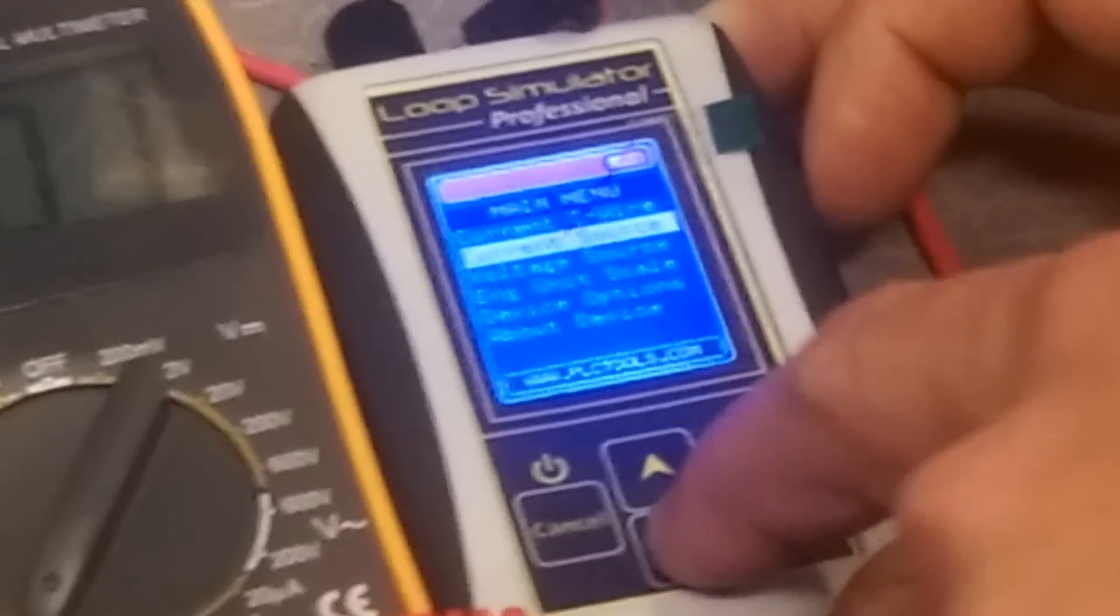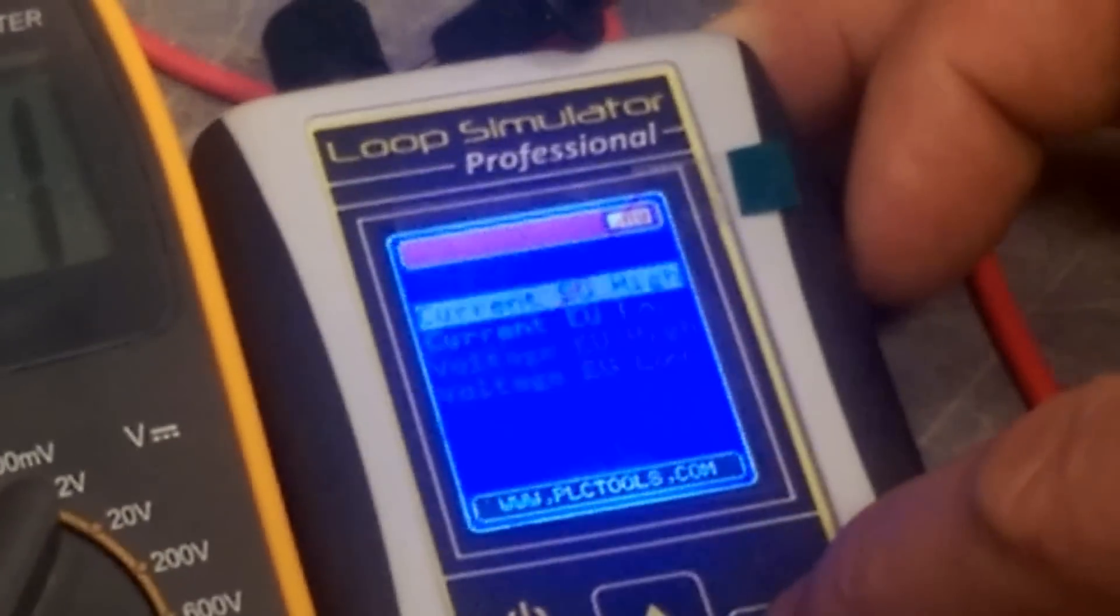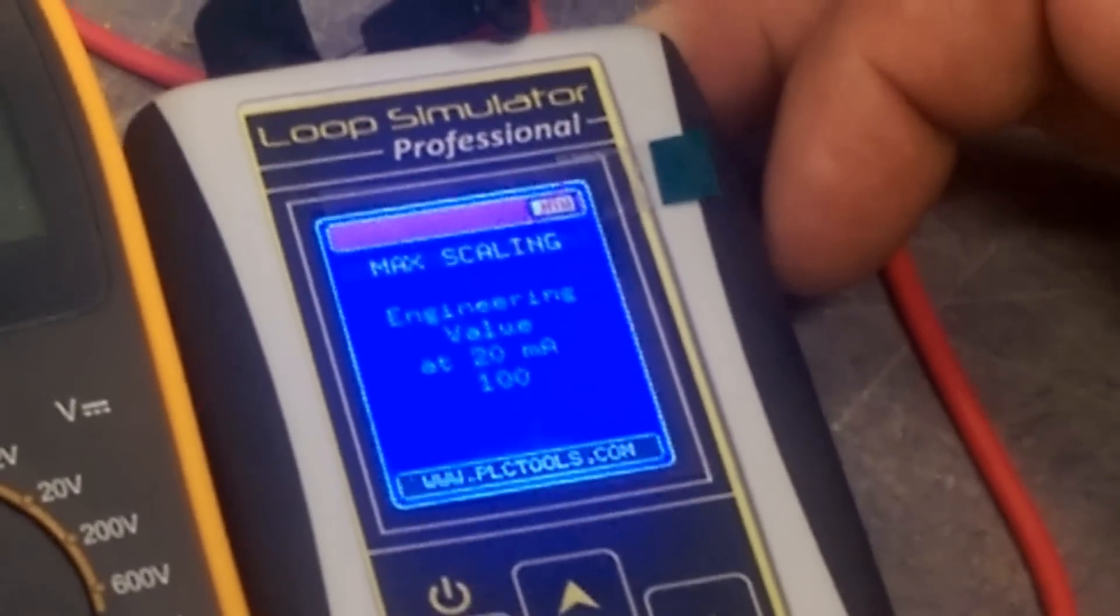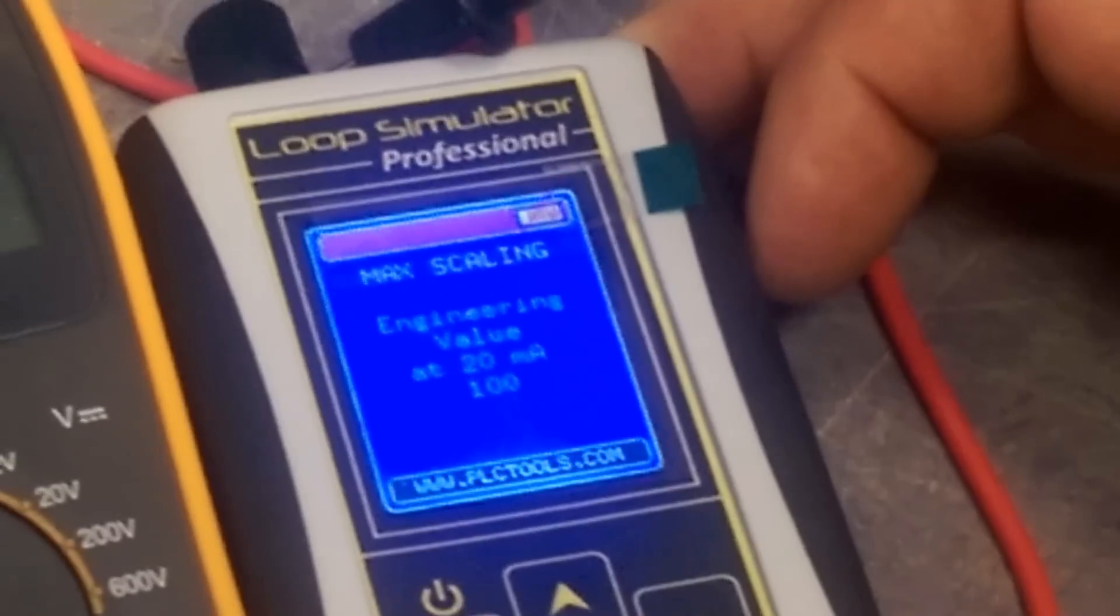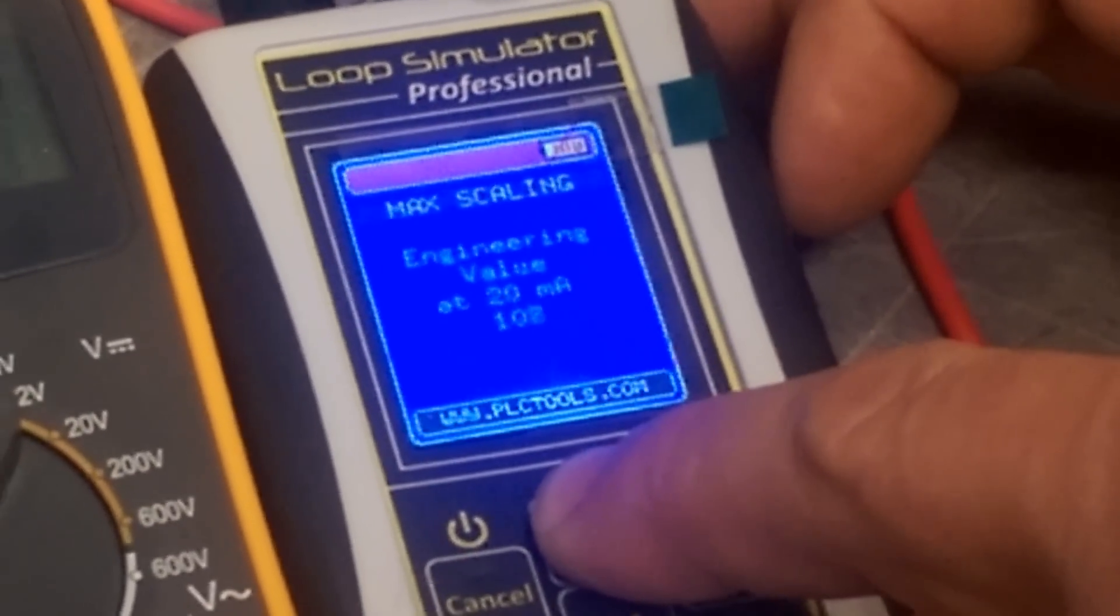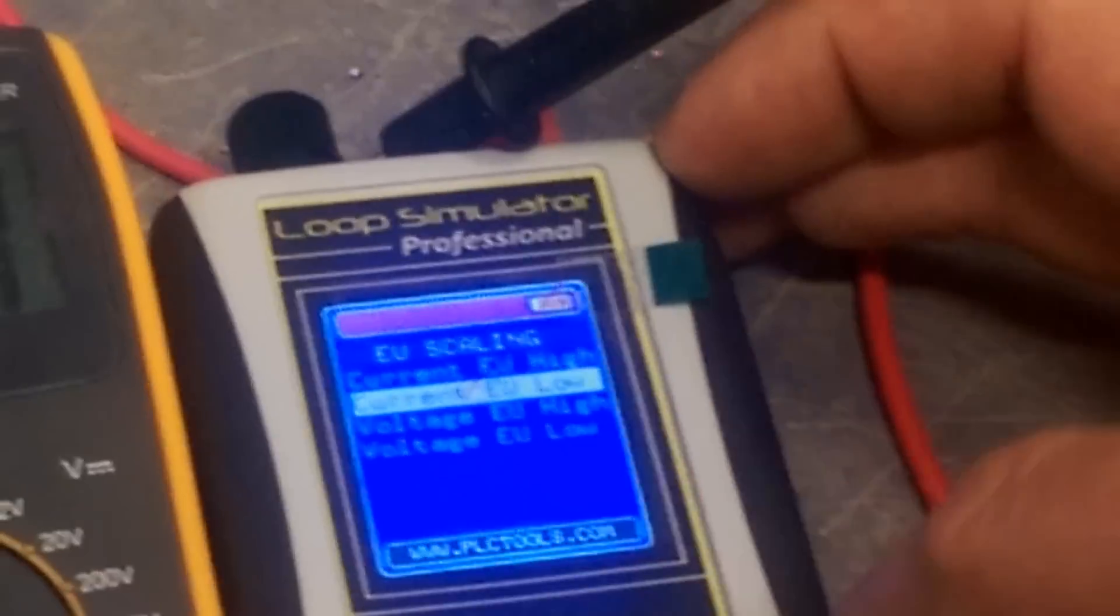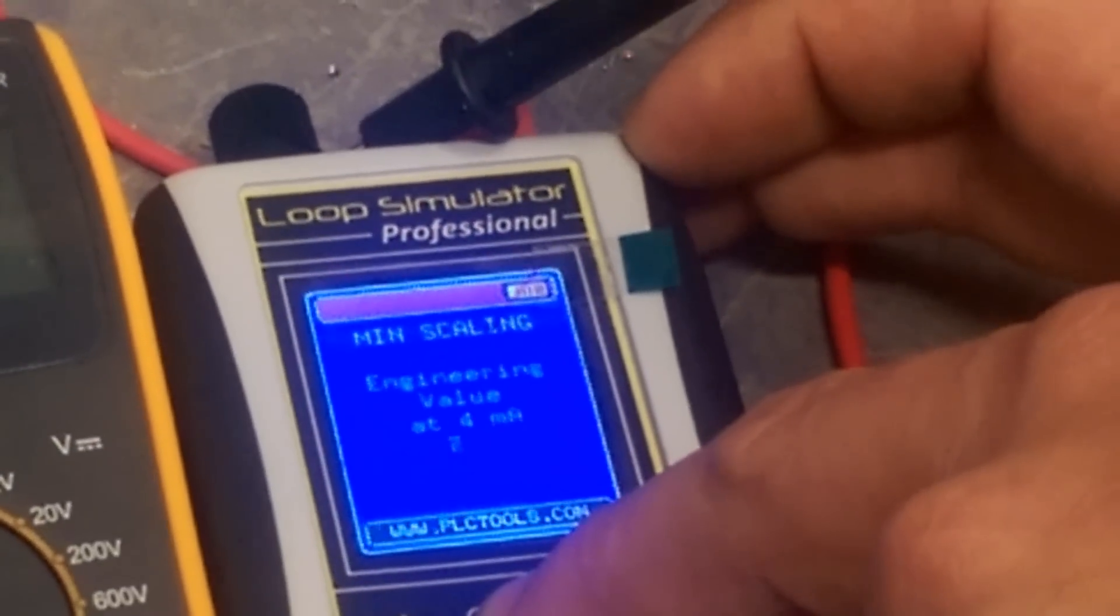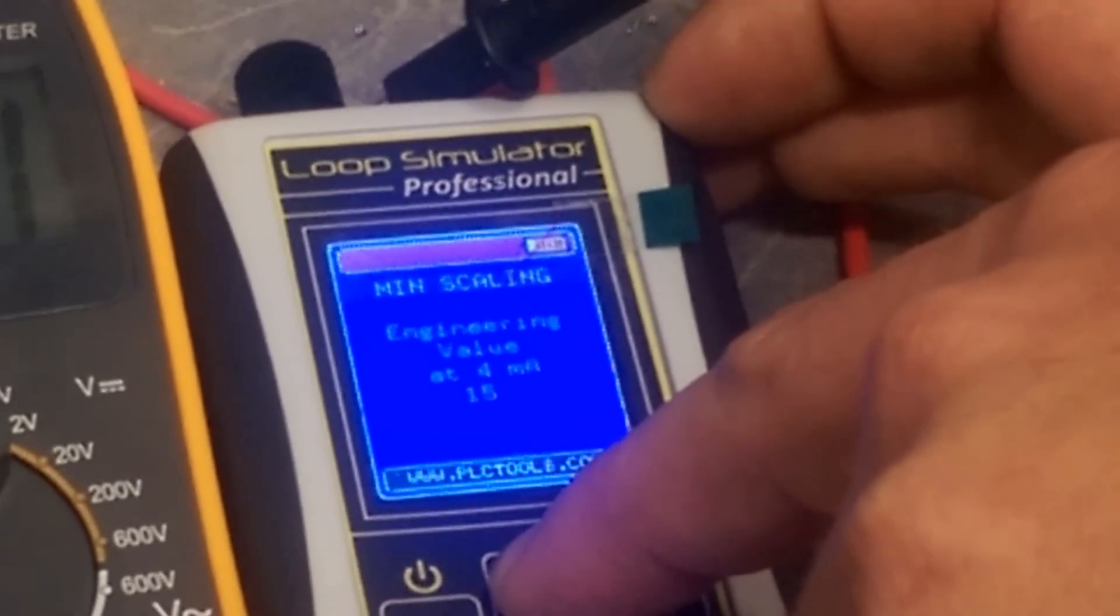Where we have our modes, if you go down, we also have engineering unit scale. And then we have EU high, which since our high value, our 20 milliamp value of our temperature probe is going to be 140, I'm going to put this up at 140. And our EU low, I am going to put it 32, because that is the low range of our temperature sensor.